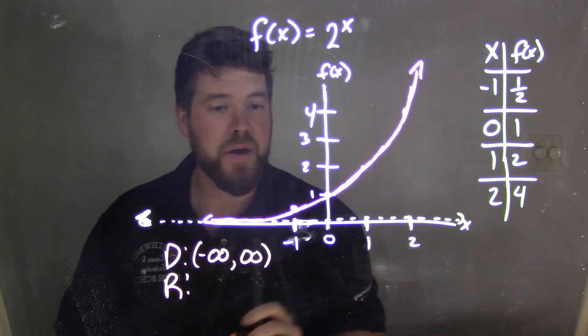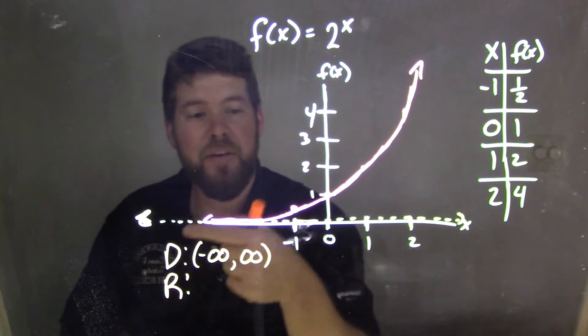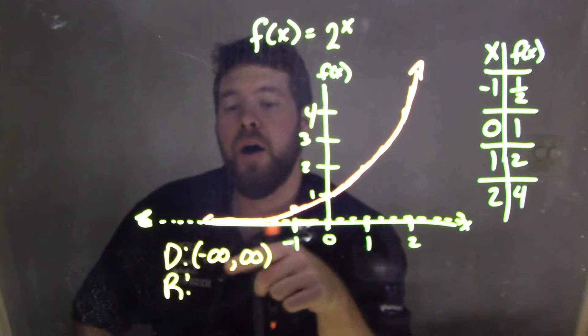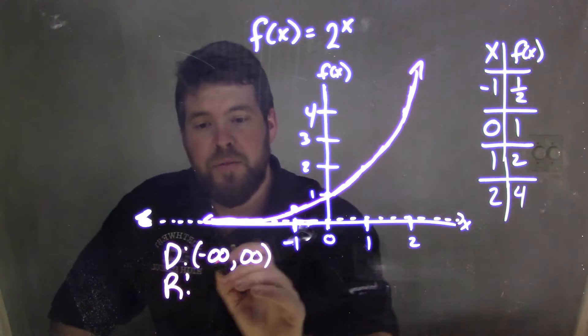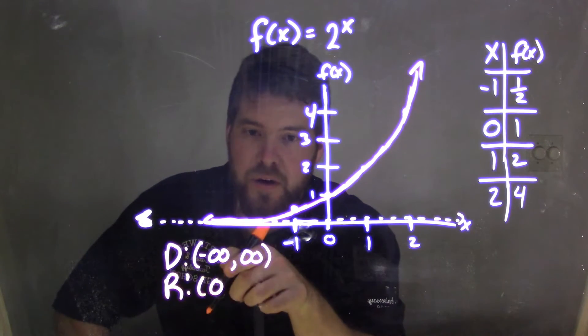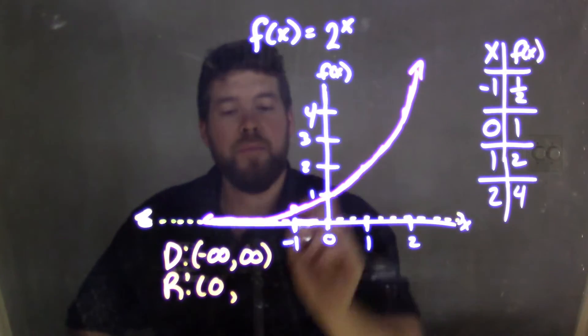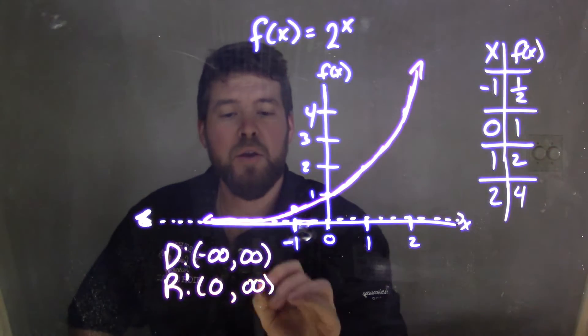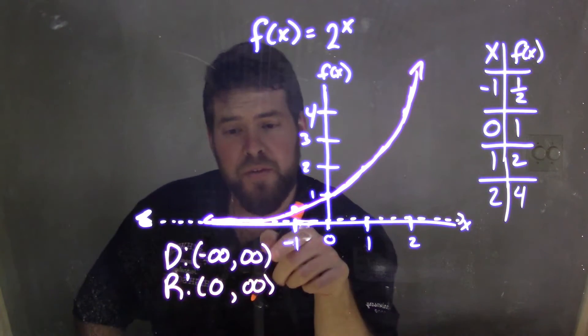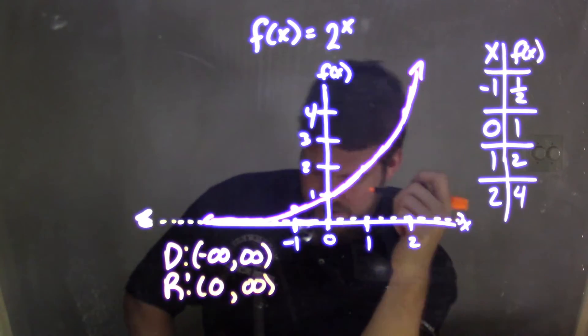Our range values, the lowest value. So the domain is the most left value, the most right value of our graph. Our range deals with the lowest value possible, which is 0. But we do not include 0 because it never will actually reach 0. And it will keep going up to positive infinity. And a little note with domain and range, we want to put parentheses around the domain as it goes to infinity because we can't actually reach infinity.